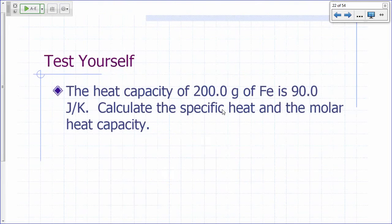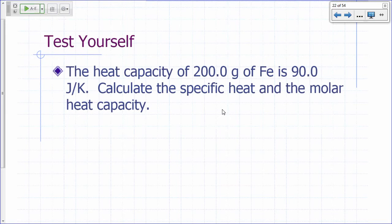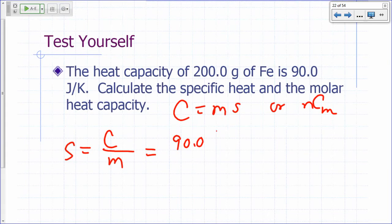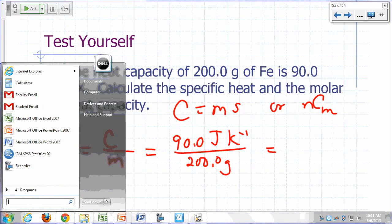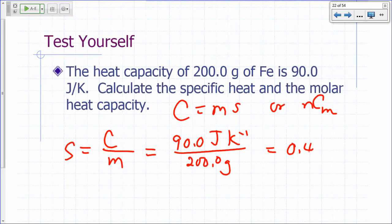Given that information, let's say you have the heat capacity of 200 grams of iron is found to be 90 joules per kelvin. What's our specific heat and what's the molar heat capacity? Heat capacity is mass times specific heat, or moles times the molar heat capacity. So how do we get specific heat? It's just heat capacity divided by the mass. What's our heat capacity? 90.0 joules per kelvin. And what's our mass? 200.0 grams. So what's 90 divided by 200? 0.45 exactly. So three sig figs, 0.450 joules per kelvin per gram.